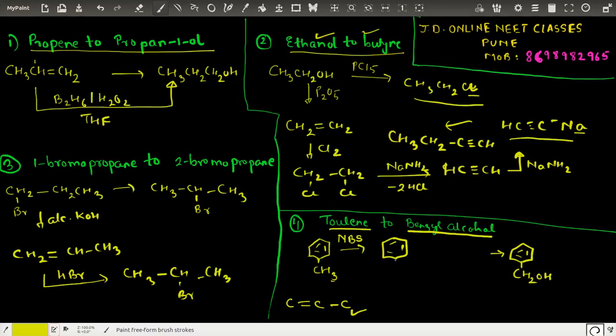Now clearly the next step would be just putting aqueous KOH. So if we put aqueous KOH, the bromine is replaced by a hydroxy group and we get benzyl alcohol. I'll be posting solutions of more questions. Thanks for watching this video.